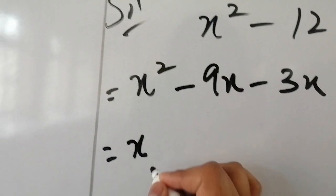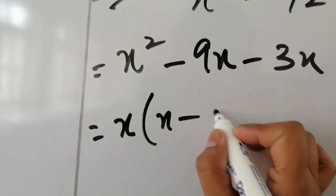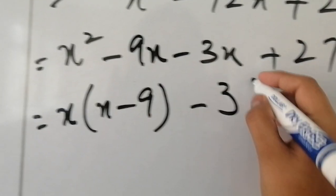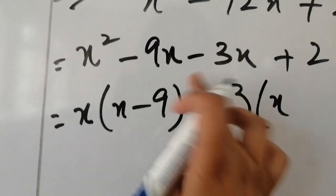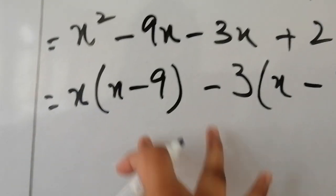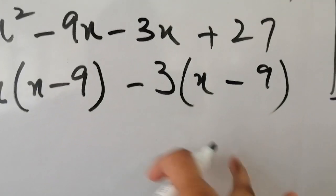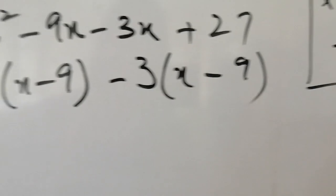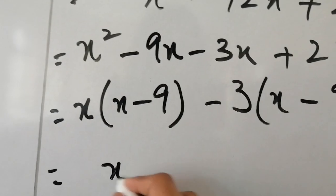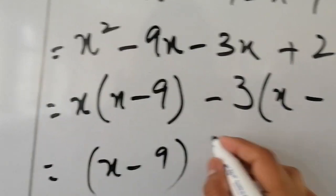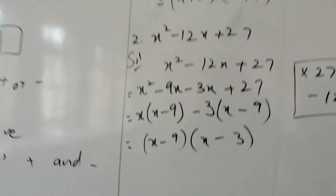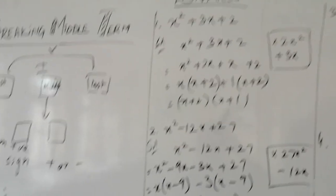Now we take common factors from each pair. From the first pair, x is common, leaving (x − 9). From the second pair, −3 is common, leaving (x − 9). Both bracket factors are the same — (x − 9) — which confirms we have done it correctly. The final factors are (x − 9)(x − 3). This completes the second positive example.